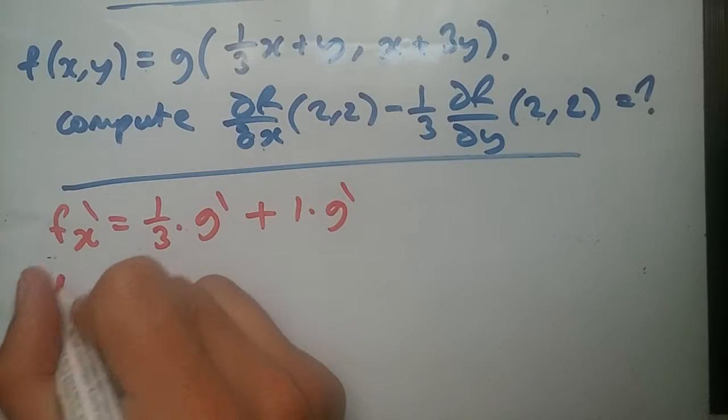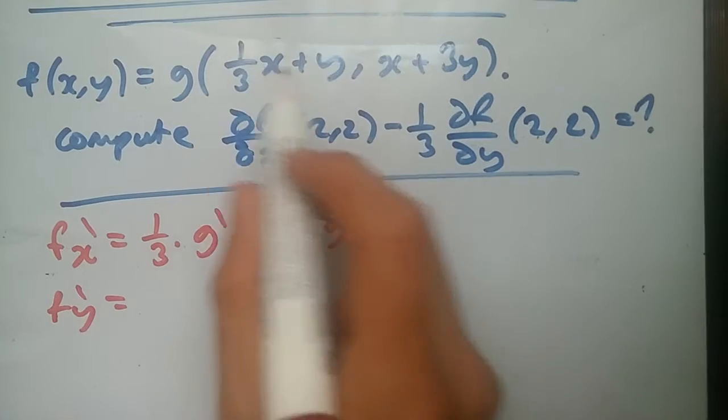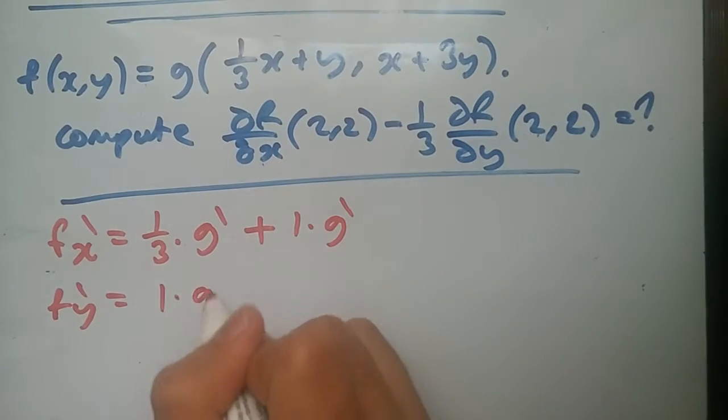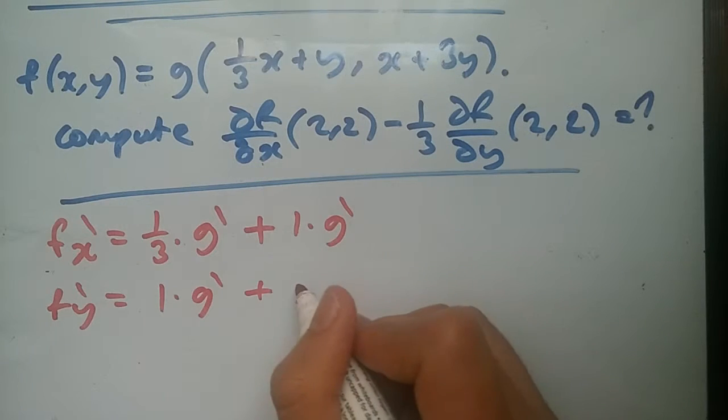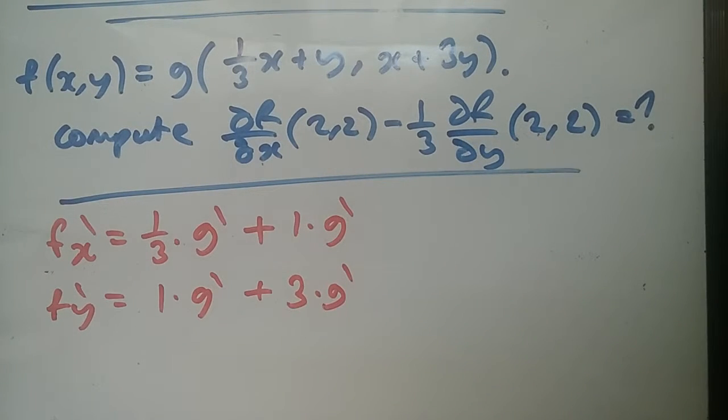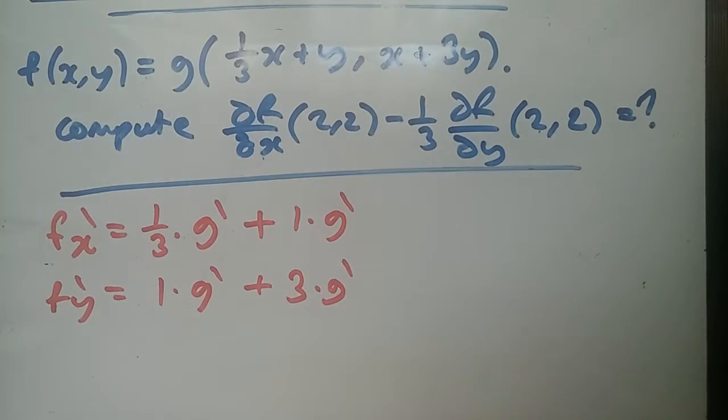Now same thing with fy prime. It's actually quite easy, isn't it? Doing the same thing here, differentiating this with respect to y, you get 1 times g prime. Plus differentiating the second part, we get 3 times g prime. That's all.